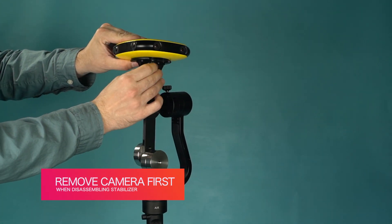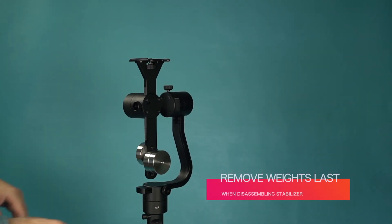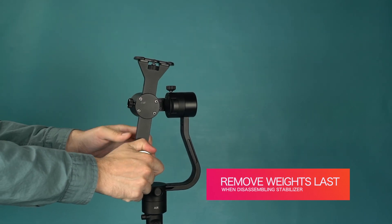When disassembling the stabilizer, remove the camera first. After that, remove the counterweights in small sections you're comfortable with.